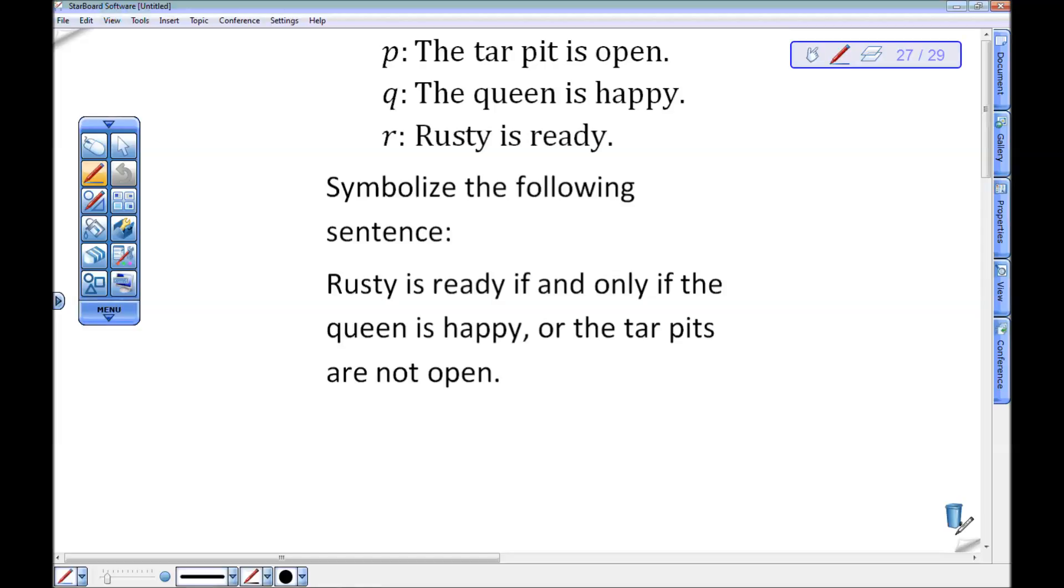Rusty is ready if and only if the queen is happy or the tar pits are not open. Note the comma, note the if and only if. If and only if is a biconditional, so I don't need to worry about any strange order. I'm just good to go. Rusty is ready, R. If and only if, biconditional. Now the queen is happy, Q, which goes that way, okay? Or, disjunction, so I want this guy. Finally, the tar pits are not open. Tar pits are open is P, so I want not P.